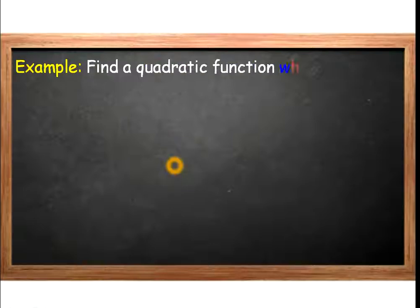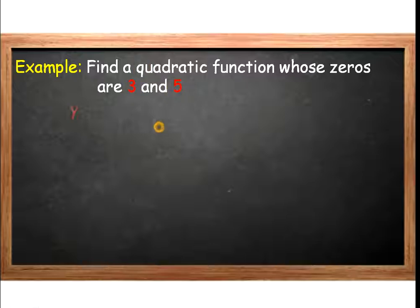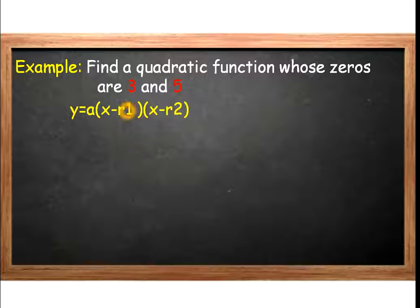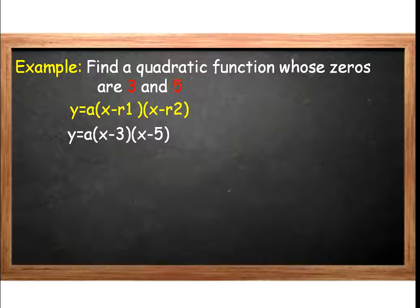Let's try another example using the formula. We have to find the quadratic function whose zeros are 3 and 5. Applying the formula, we have y is equal to a times the quantity x minus r1 times the quantity x minus r2, where r1 is the first zero and r2 is the second zero. Substituting the values 3 and 5, we have y is equal to a times the quantity x minus 3 times the quantity x minus 5.